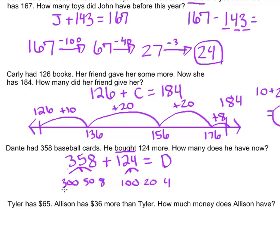Then I am going to add my pieces together. 300 plus 100 is 400. 50 plus 20 is 70.